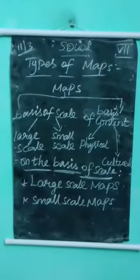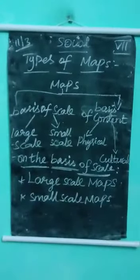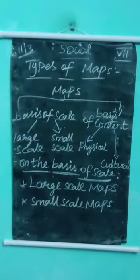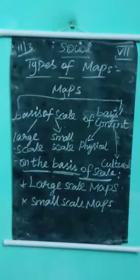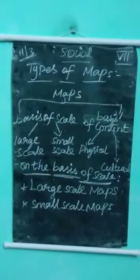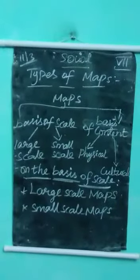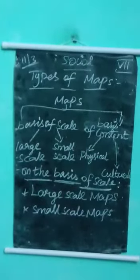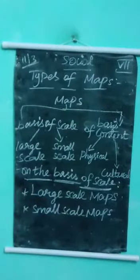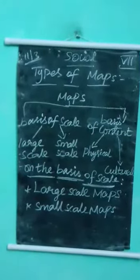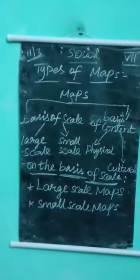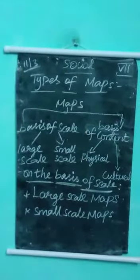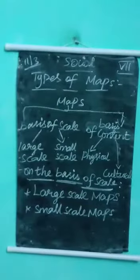Topographical maps are prepared by the Survey of India. These maps include natural features like hill stations as well as man-made features such as buildings, roads, and bridges. This type of map is very detailed.